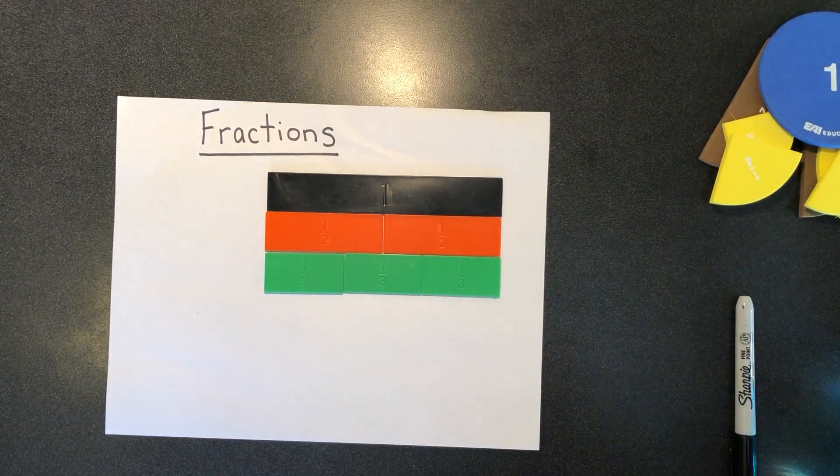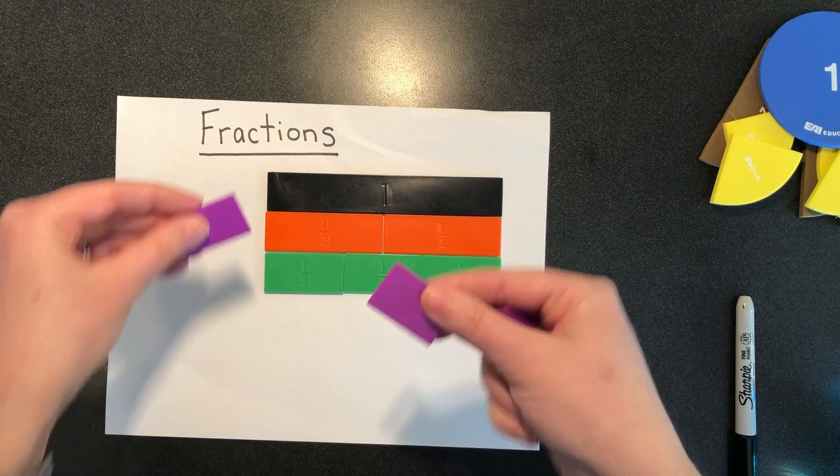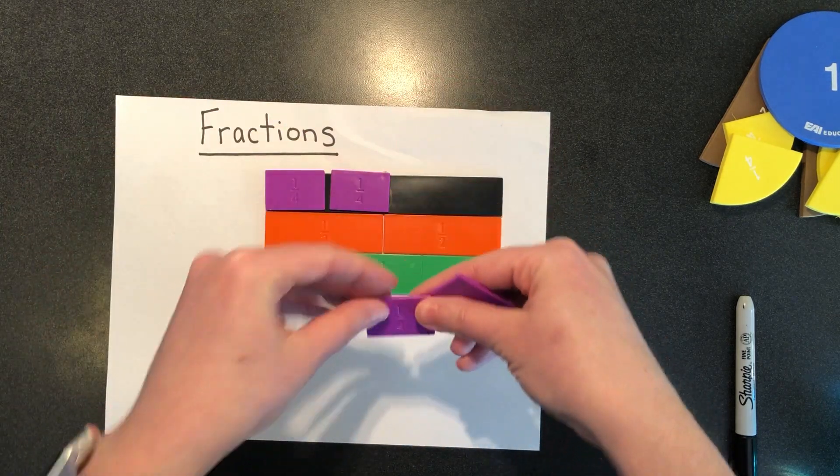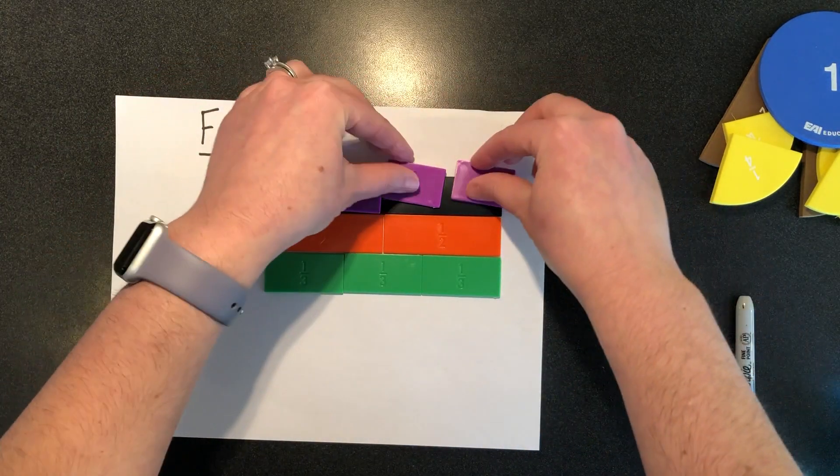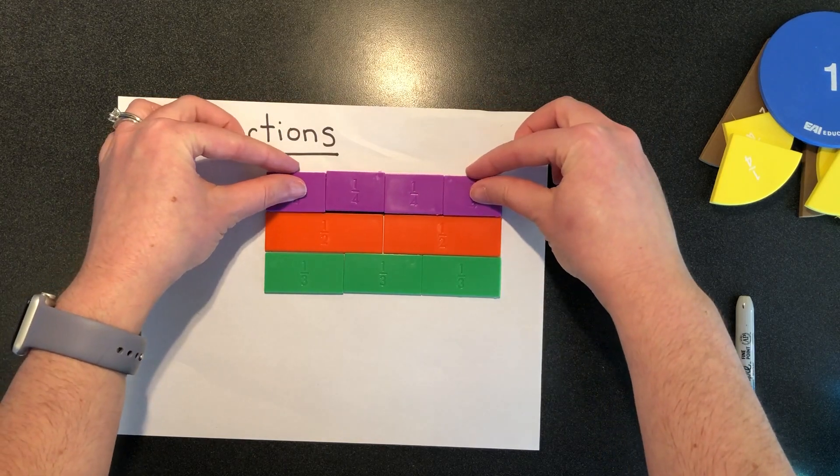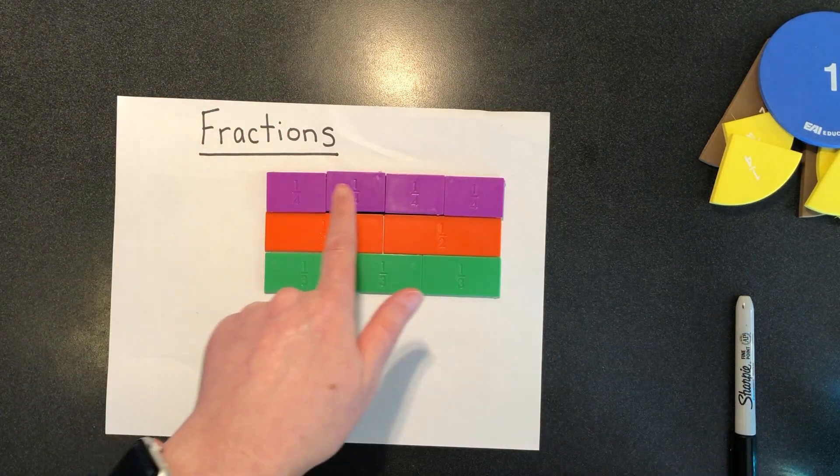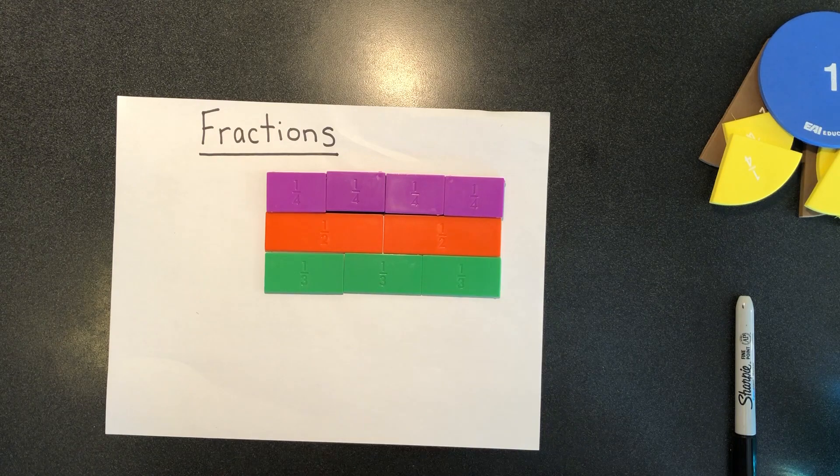If I were to cut my whole into four equal pieces, I would have fourths. One fourth, two fourths, three fourths, four fourths.